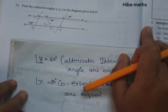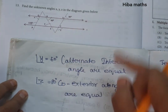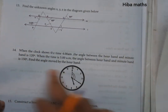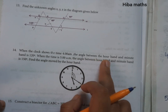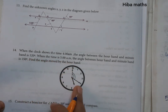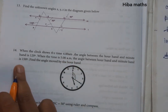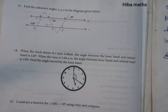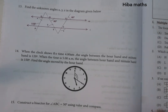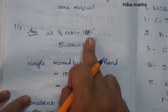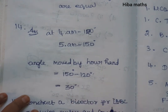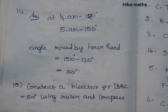For y: these are alternate interior angles, which are always equal. So y is equal to 60 degrees. For z: these are co-exterior angles, which are always equal, so z is equal to 80 degrees. For the 14th question, when a clock shows 4am the angle between the hour and minute hand is 120 degrees, and at 5am it is 150 degrees. The angle moved is 150 minus 120, which equals 30 degrees.